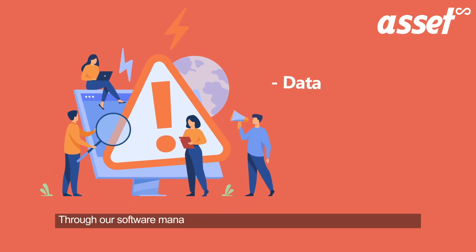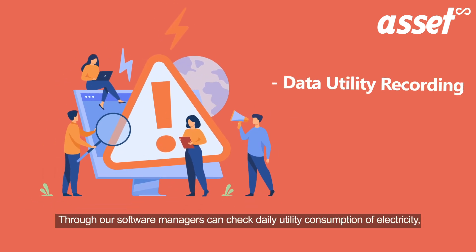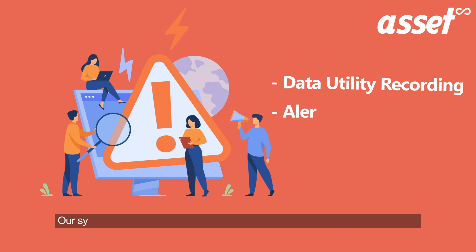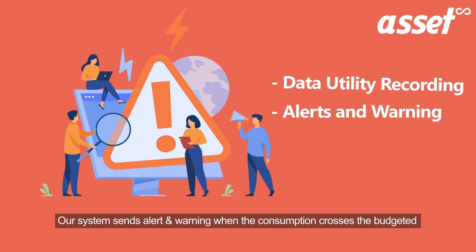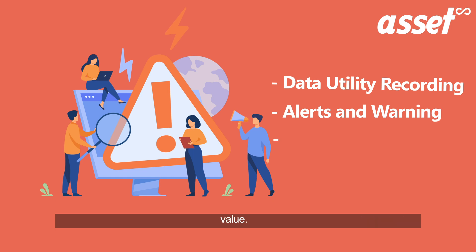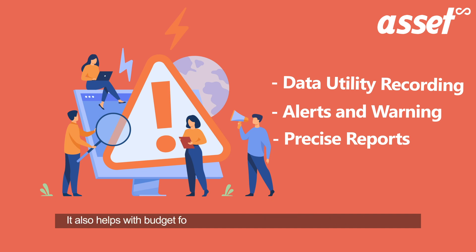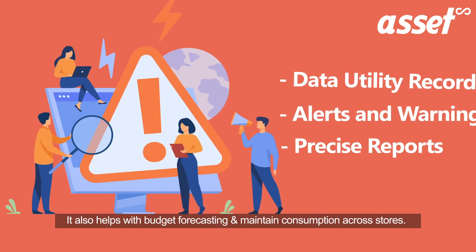Through our software, managers can check daily utility consumption of electricity, water, and gas with the help of this software's daily recording function. Our system sends alerts and warnings when the consumption crosses the budgeted value. Reports created by our software are helpful in avoiding utilities wastage. It also helps with budget forecasting and maintaining consumption across stores.